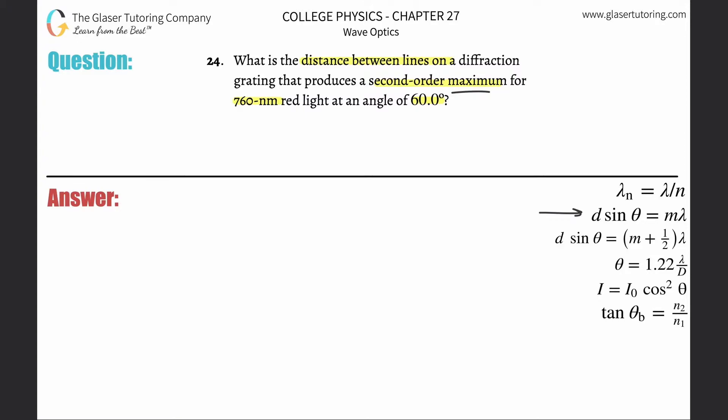The equation is going to be the same. So this is basically d, or the distance between the slits here, is then multiplied by the sine of the angle, is going to then equal the order multiplied by the wavelength.